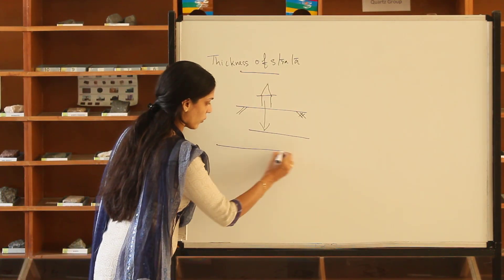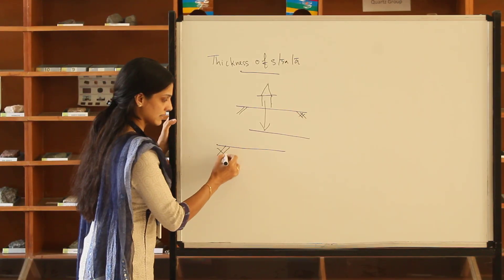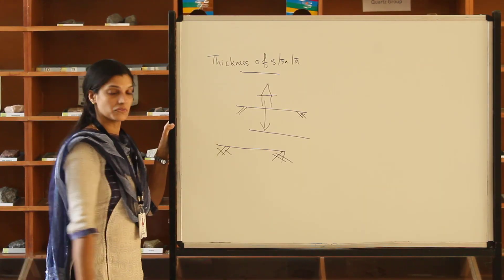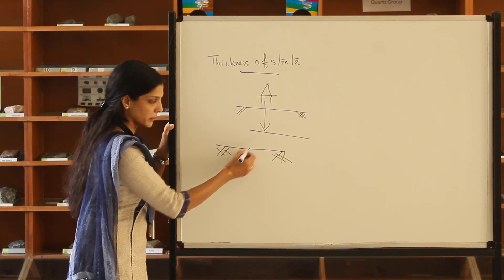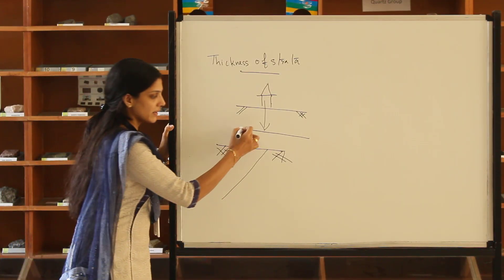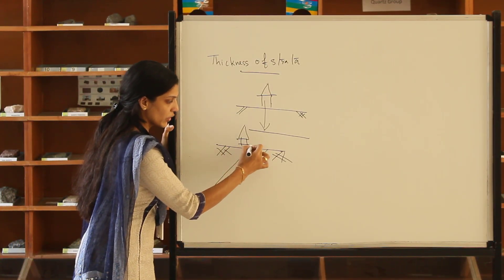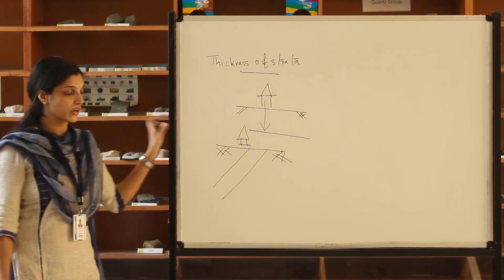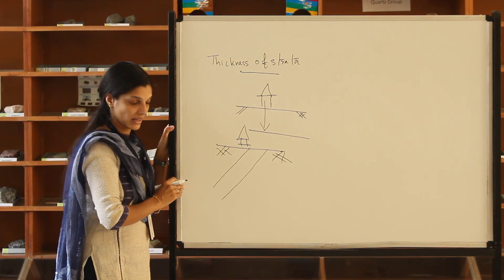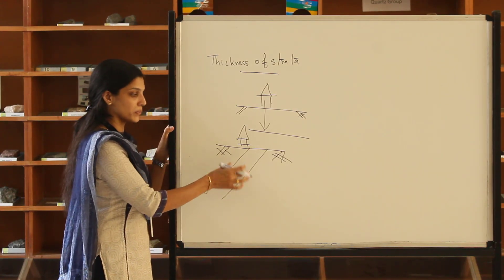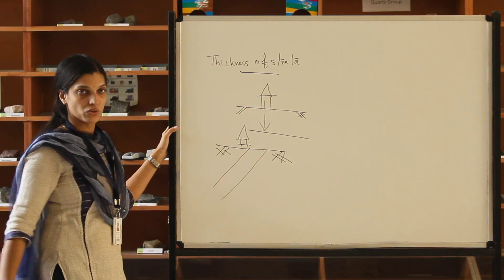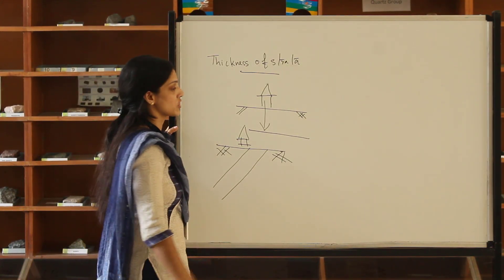The condition will always be such that, suppose this is the horizontal surface — that is the ground surface — the hard strata present below the earth will be inclined. In this case, the building loading will not be equal; it will be uneven into the hard strata. So we have to study the properties of this hard strata in detail. That is what this particular problem is mainly concentrating on.